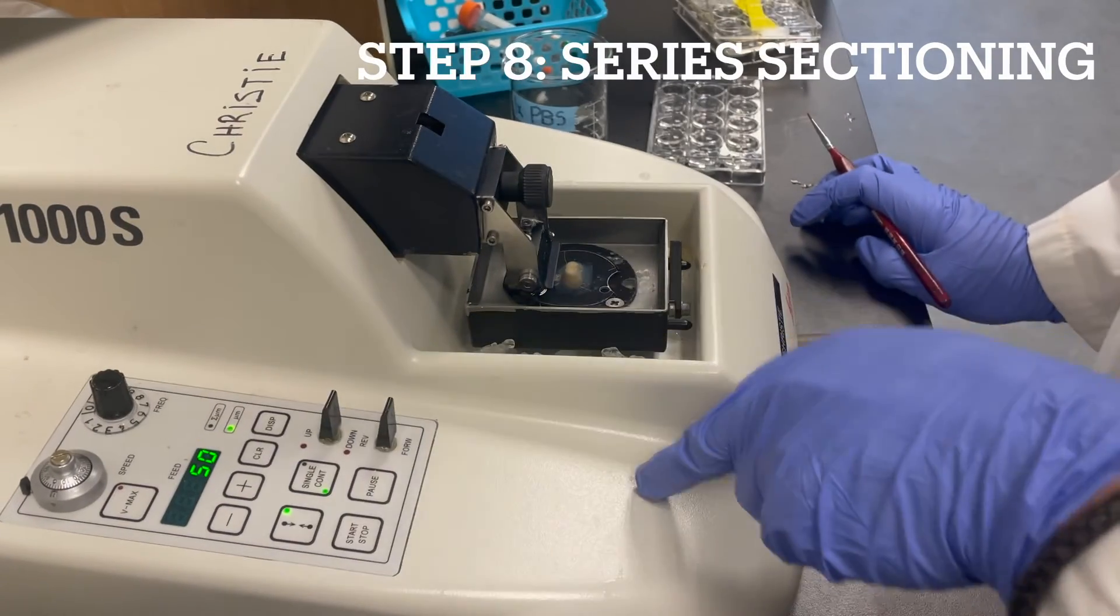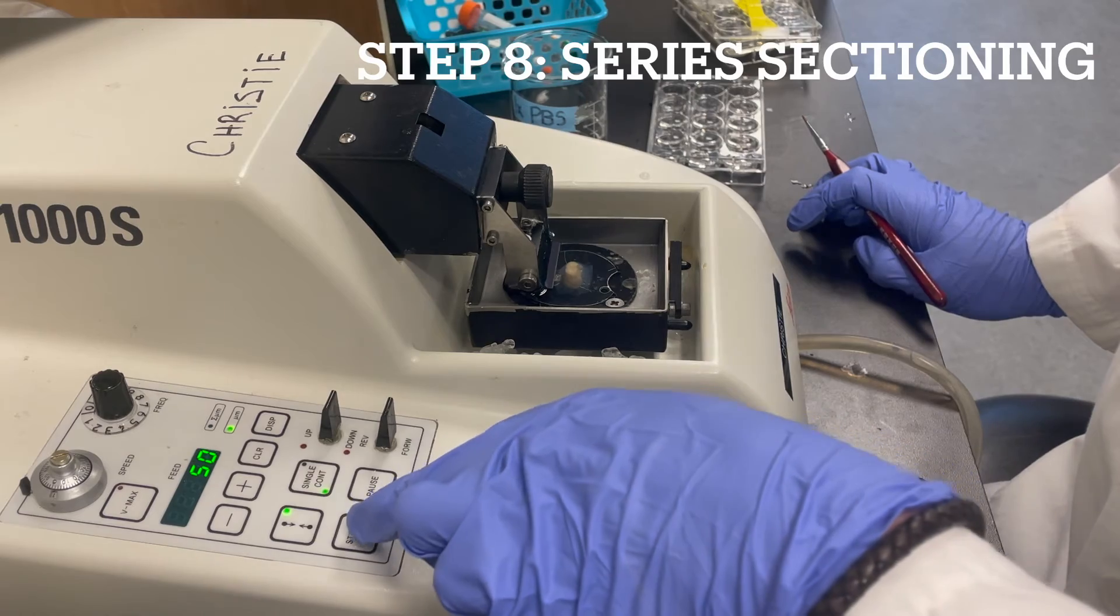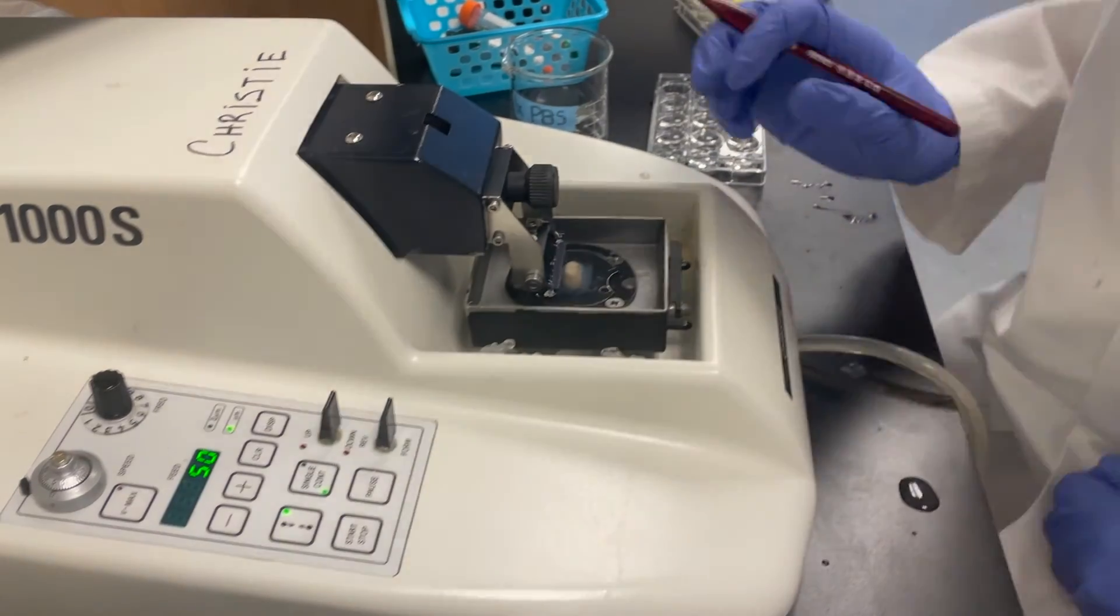Now once the machine is set, we will fill the tray full with cold 1xPBS, surround the tray with ice, and press start.